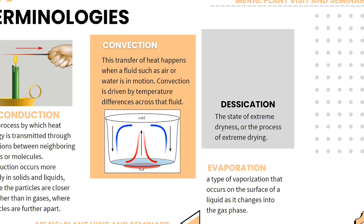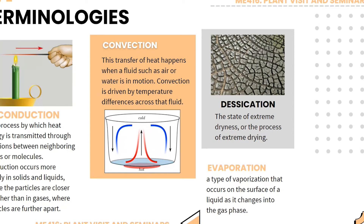Now for the terminologies used in drying processes. First is conduction — the process by which heat energy is transmitted through collisions between neighboring atoms or molecules. Conduction occurs more readily in solids and liquids where particles are closer together than in gases. In short, conduction is the transfer of heat from one object to another. Convection is the transfer of heat that happens when a fluid such as air or water is in motion, driven by temperature differences across that fluid — it usually occurs in moving fluids or air.